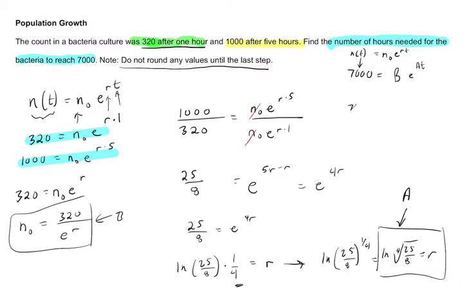7,000 divided by B, and then that's going to equal e^(At). And take the natural log of both sides. So ln(7000/B), and that's going to equal A times t. We want to know what t equals, so divide both sides by A. And I'm running out of room here, so I'm going to just erase that A and t and rewrite it. So it's 1/A—that's dividing by A—times ln(7000/B). That's the time.